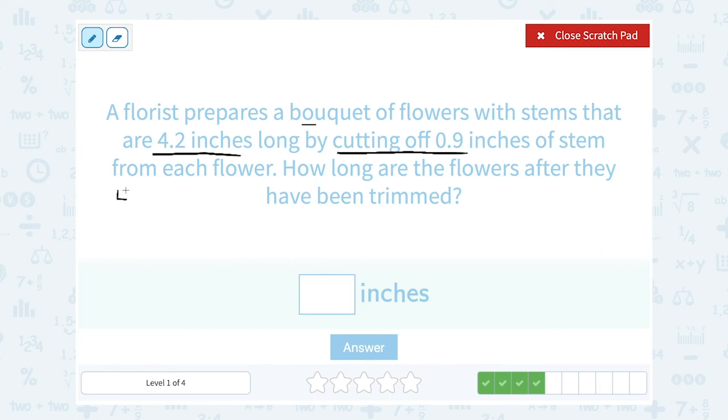So we need to make sure we're setting this up as a subtraction problem. The flowers started out at 4.2 inches, and then we're going to subtract or cut off 0.9. And lining up the decimals. So I'm going to have to borrow here. Let's make this a 3. So in the tens place, we're going to think of that as 12 minus 9. 12 minus 9 gives me 3, and in the ones place, 3 minus 0 gives me 3, so the flowers are down to 3.3 inches.